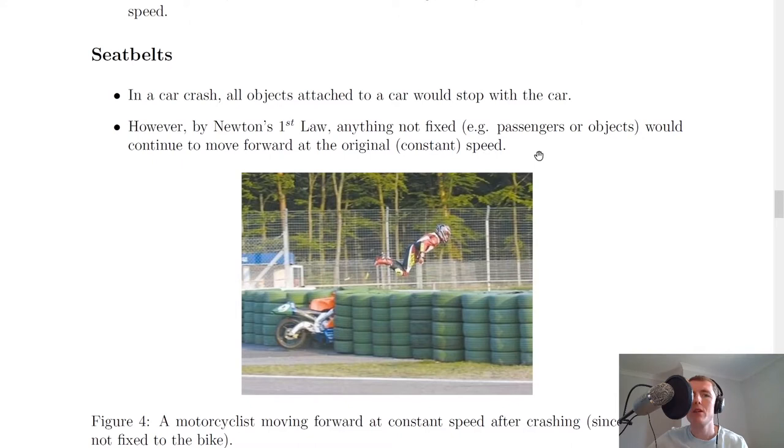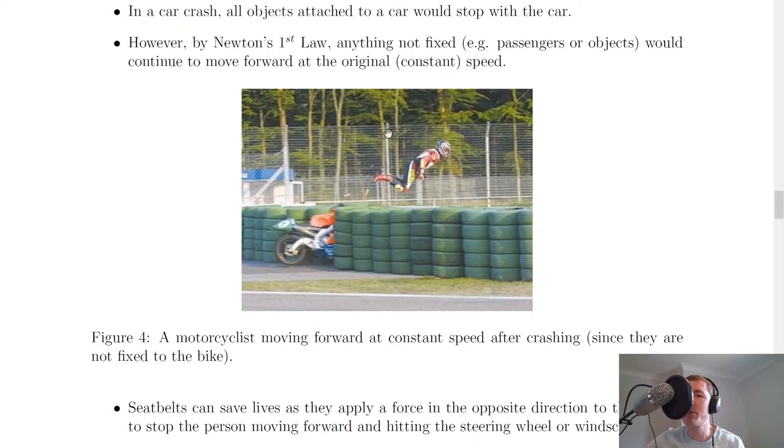And we can think about seatbelts to put this into context. So in a car crash, all objects attached to a car would stop with the car itself. However, by Newton's first law, anything not fixed to the car, for example passengers or objects that are just sitting on the seats, would continue to move forward at the original constant speed.